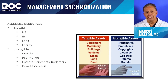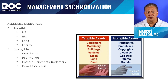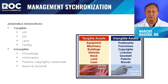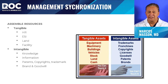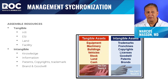When assembling resources for management synchronization, you must assemble the right resources — both tangible and intangible. Tangible resources include the human resources needed for the job, equipment, supplies, and instruments (referred to as the EESI technique), and the land, terrain, or facility you plan on using. Intangible resources include the knowledge and information you need — applied to patents, copyrights, trademarks, brand, and even goodwill developed over the years.